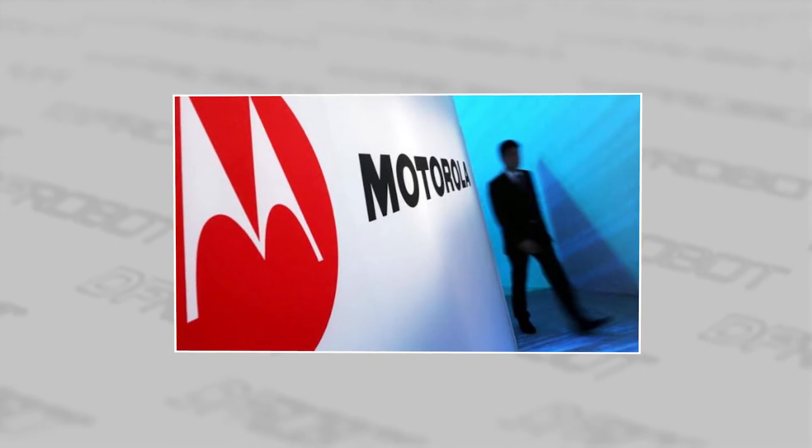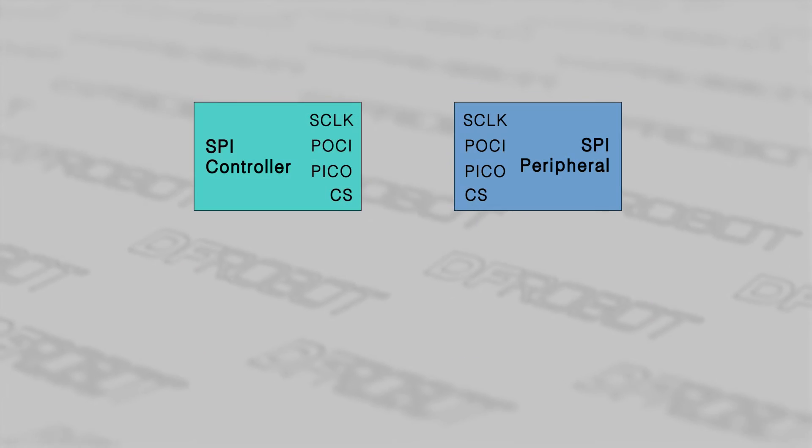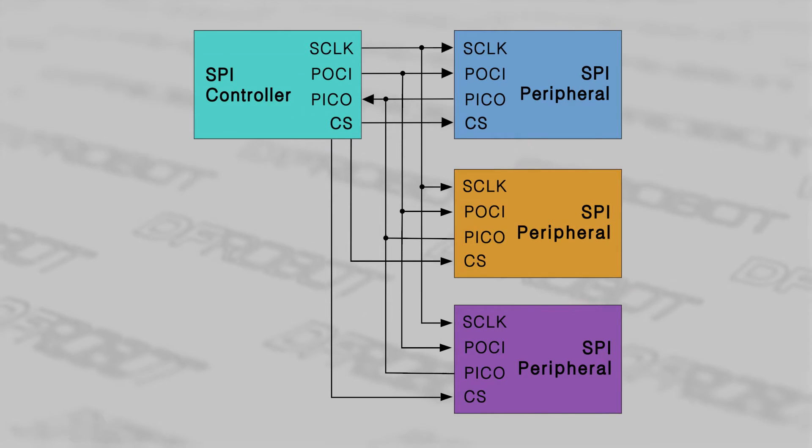The SPI interface was developed by Motorola in the mid-1980s. Multiple devices can coexist by chip selection, but that also means more complex connections. Besides, SPI has a high demand for wire routing because of its high transmission speed.